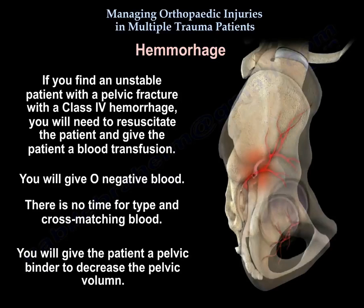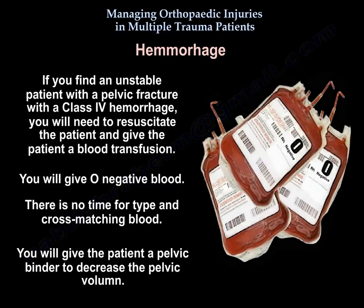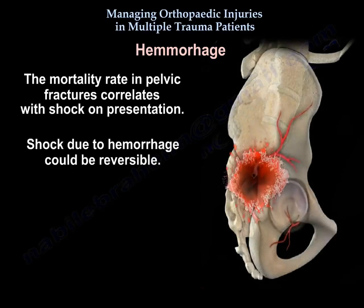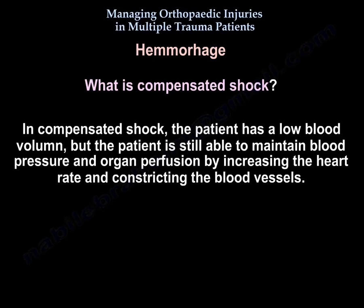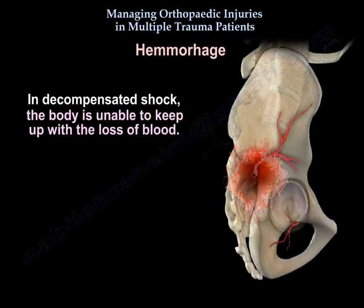If you find an unstable patient with a pelvic fracture and class 4 hemorrhage, resuscitate the patient and give blood transfusion — O-negative blood, as there is no time for type and cross-match. Apply a pelvic binder to decrease pelvic volume. Mortality in pelvic fractures correlates with shock on presentation, though shock due to hemorrhage can be reversible. In compensated shock, the patient maintains blood pressure and organ perfusion by increasing heart rate and contracting blood vessels. In decompensated shock, the body is unable to keep up with blood loss.